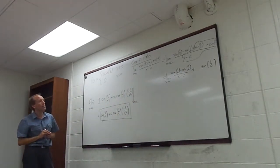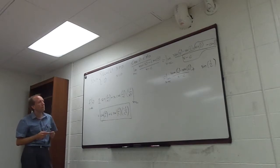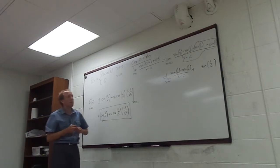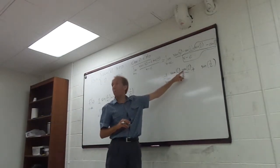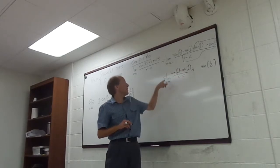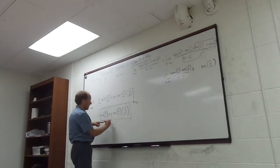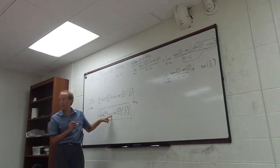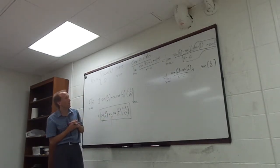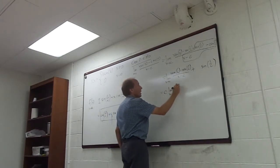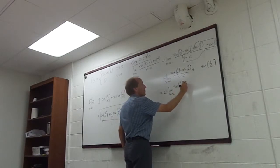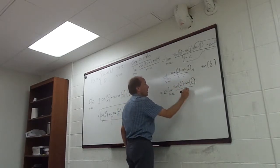The only part that's left is the limit as x approaches c of [x·sin(1/x) minus x·sin(1/c)] all over x minus c. Now I have a common factor of x, and as x approaches c, that's converging to c. So it's going to be c times the limit as x approaches c of [sin(1/x) minus sin(1/c)] all over x minus c.